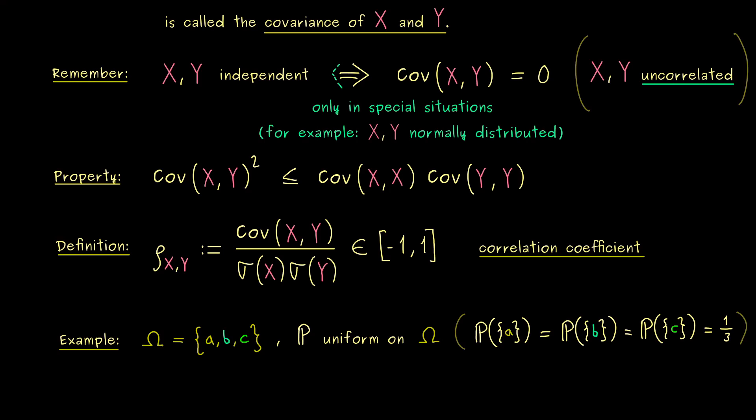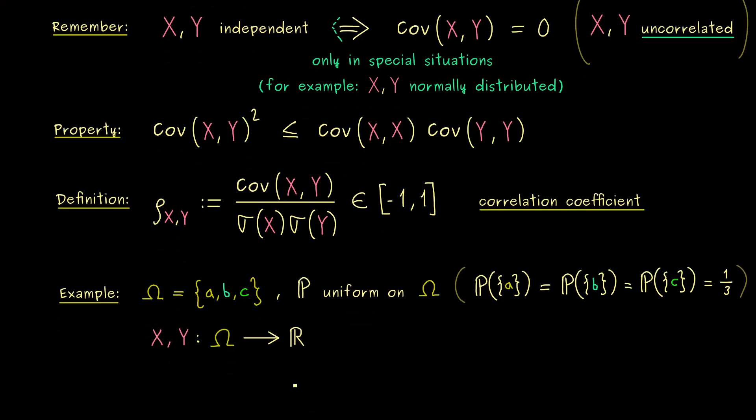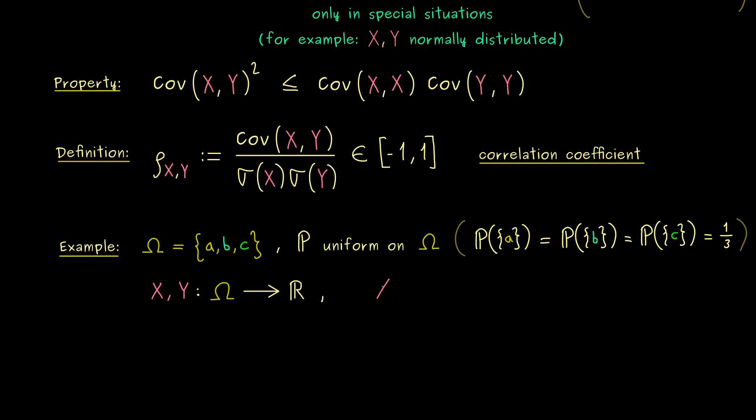And now our probability measure P should be uniform on omega. This means all the singletons here have the same probability and it has to be one third. Indeed, that's what you know, that's what we mean by a uniform distribution on a discrete set. And now missing is only the explicit definition of the two random variables.